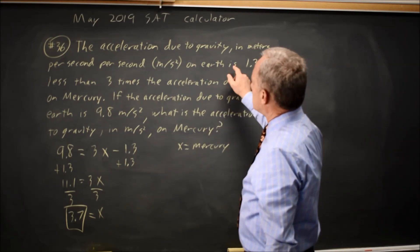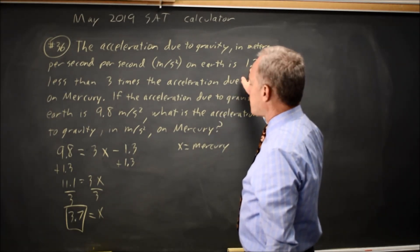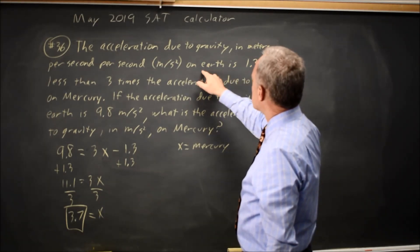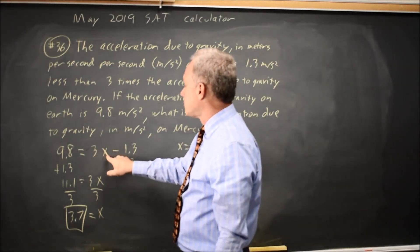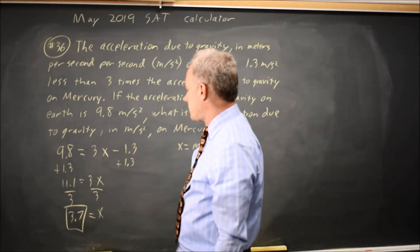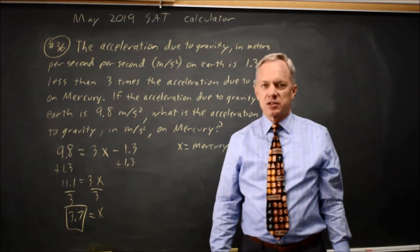Rereading the question, I was supposed to subtract 1.3 because they said Earth was less by 1.3 than 3 times Mercury, so I take 3 times Mercury, and I make the number less by subtracting. So I did this correctly.